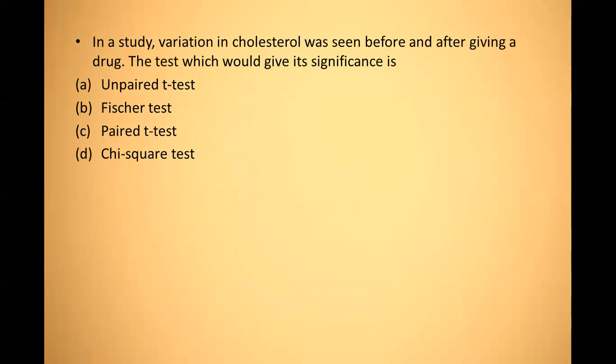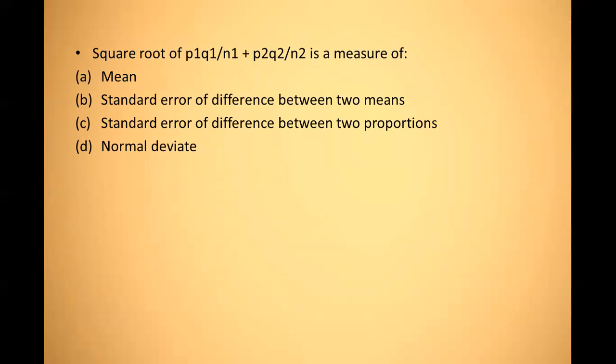Now let's start the MCQs — previous year questions. In a study, the mean cholesterol was measured before and after giving a drug. Which test would give significance? Since the mean cholesterol levels are being measured in the same group of individuals before and after an intervention, this is paired data, and the most appropriate test is the paired t-test. Answer: C — paired t-test.